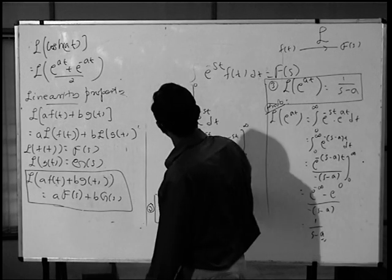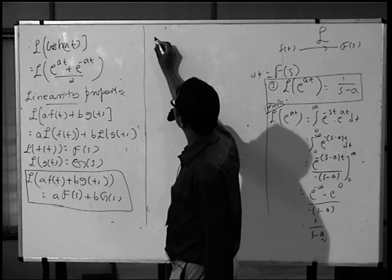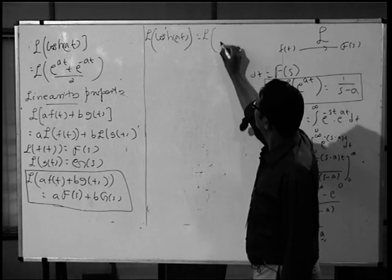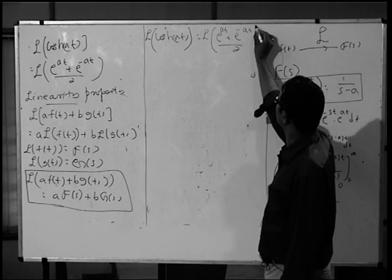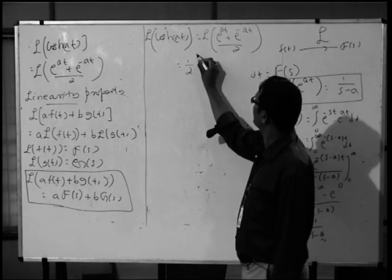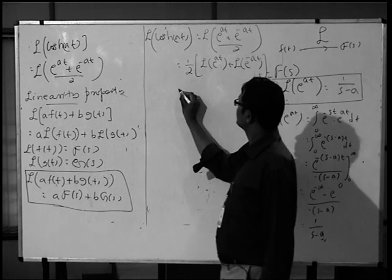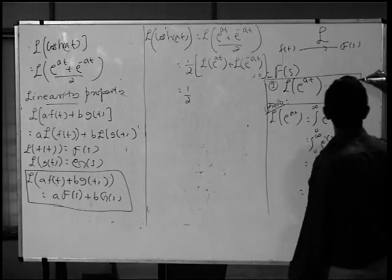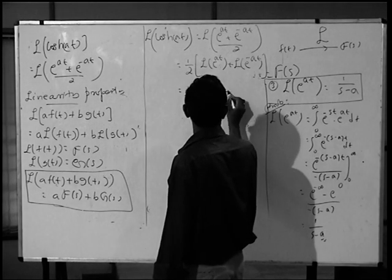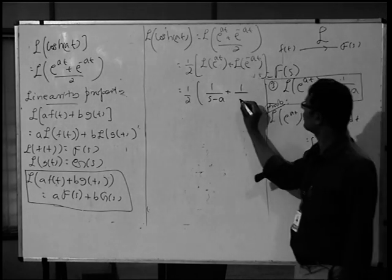Applying the linearity property: Laplace transform of cosh(at) equals L of [e raised to at plus e raised to minus at] divided by 2. The constant 1/2 can be taken outside the operator, giving 1/2 times [L{e^at} plus L{e^(-at)}]. That equals 1/2 times [1/(s minus a) plus 1/(s plus a)]. Taking LCM as (s² minus a²), the numerator becomes (s plus a) plus (s minus a) equals 2s, giving 1/2 into 2s/(s² minus a²), which simplifies to s/(s² minus a²).